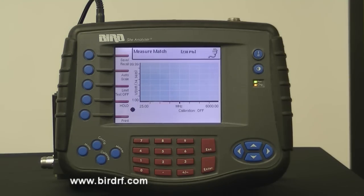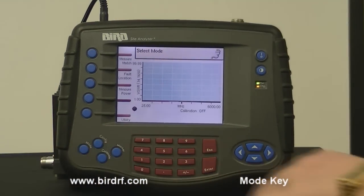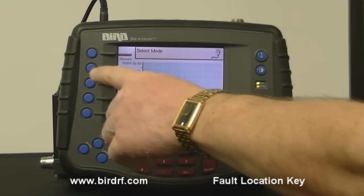To enter a custom cable type, you want to press the following keys on the site analyzer. The first key would be mode, followed by fault location.